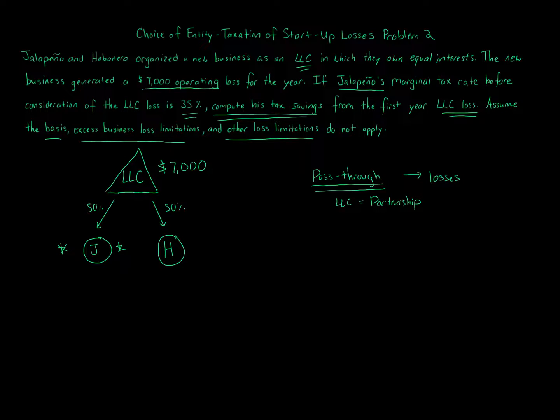So all we have to do here is just remember those rules that a pass-through entity, you can carry over losses like an LLC taxed as a partnership. So Jalapeno, we just take the $7,000 loss, multiply that by Jalapeno's percentage, 50%, and the answer here—Jalapeno's share of that $7,000 loss is $3,500. And that is the answer. So $3,500 loss, that is the answer.